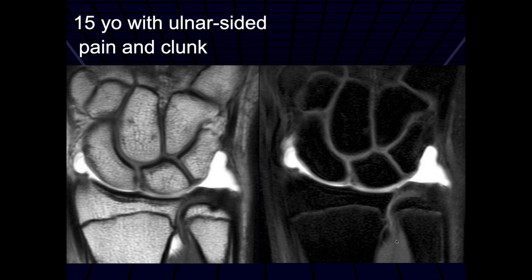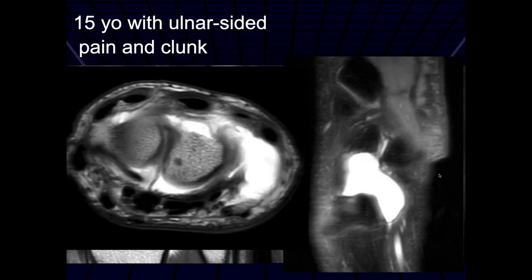At least the radial side of the TFC looks normal. There is a lot of fluid at that kind of pre-styloid recess, so I'm wondering if there's something abnormal going on there — it's extending out too much.